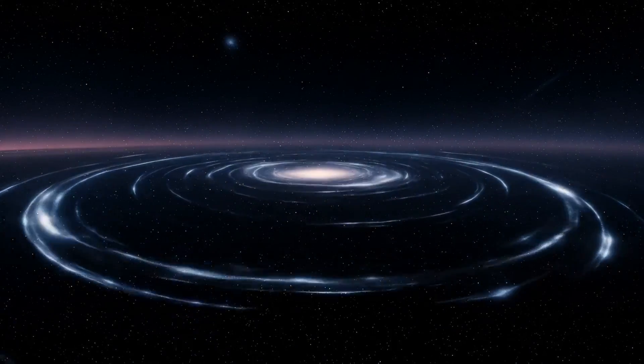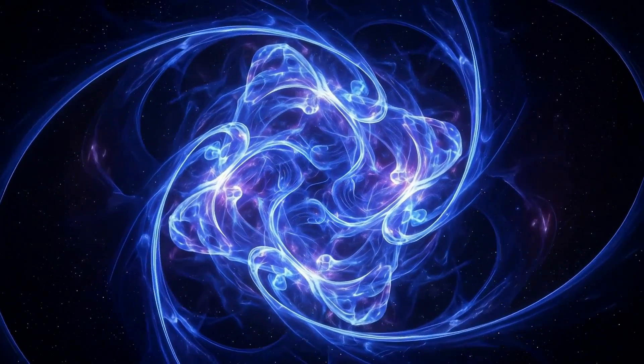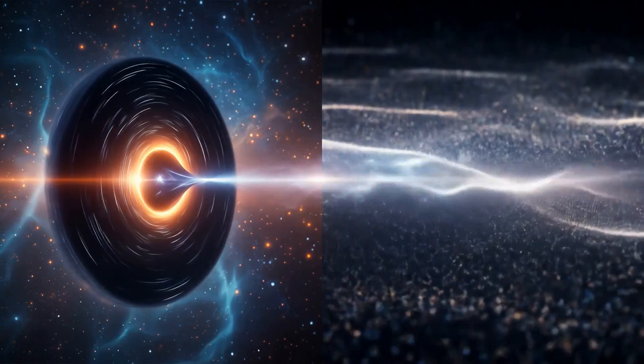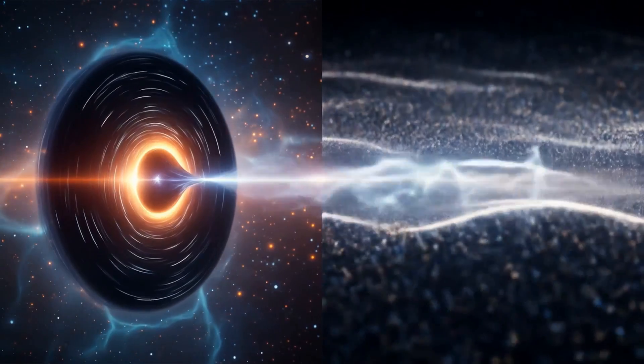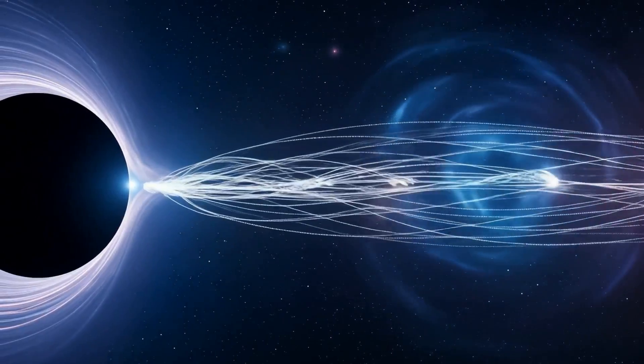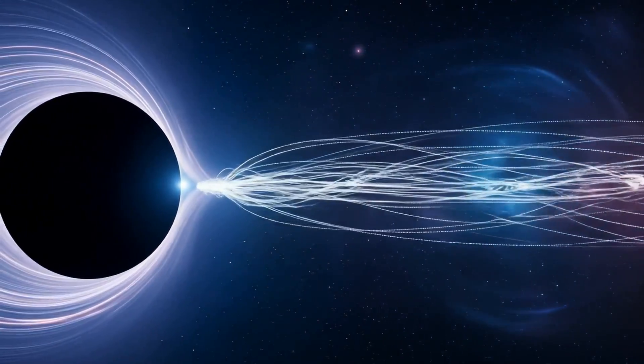The black hole itself forms wherever quantum information overlaps densely enough to reach a Schwarzschild radius. Black holes are the product of uncertainty. They always exist. Hawking radiation escapes outward from each singularity, encoded with spin frequency and angular momentum.